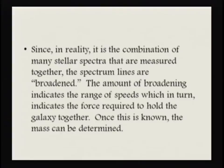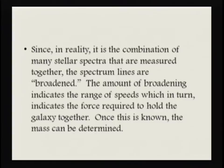The spectrum lines are broadened, and for a spiral galaxy, we're looking at how much mass is needed in that galaxy for it to stay together and give the types of speeds we see in those stars as we move outward from the center. The amount of broadening indicates a range of speeds, and that gives a feel for the force required to hold that galaxy together. Once we know that, it gives us a feel for how much mass you have within that galaxy.